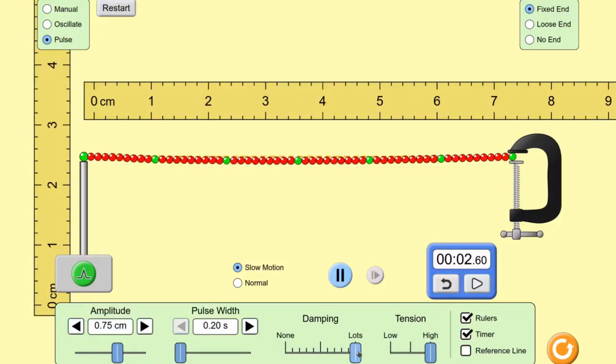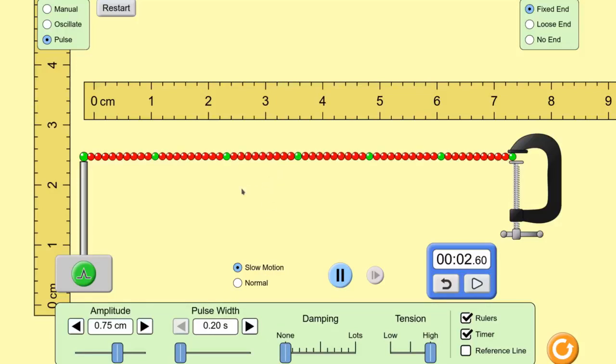We can measure the time for one round trip, briefly crank up the damping to make that pulse disappear. And from the round trip time and the known length between the pulse generator and the fixed end, you can then calculate the wave speed.